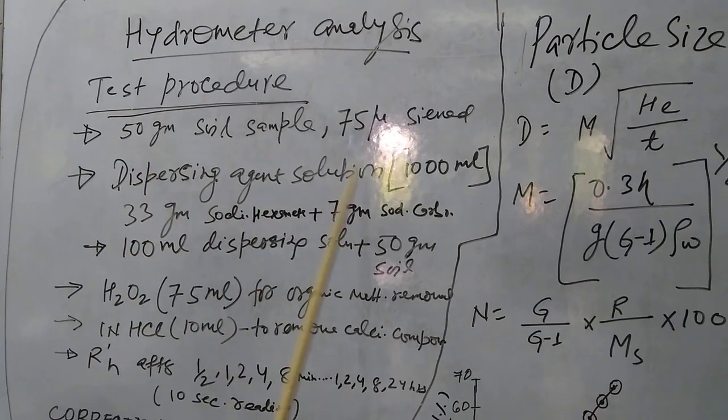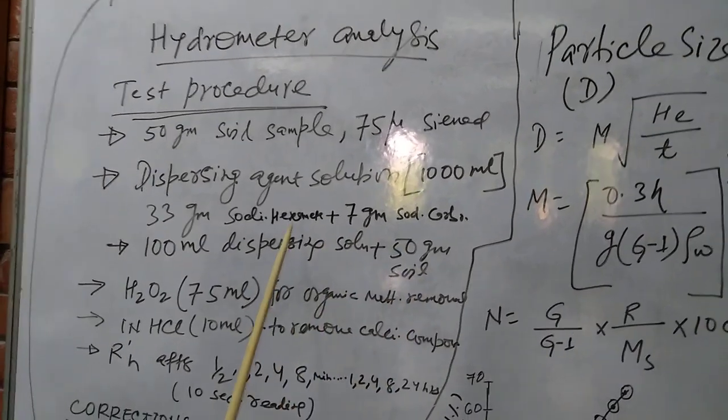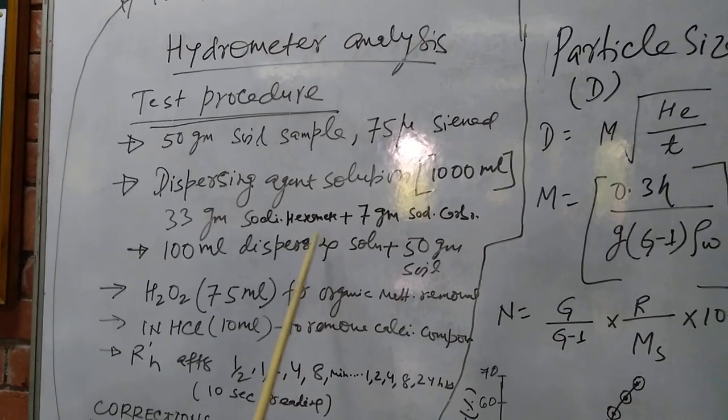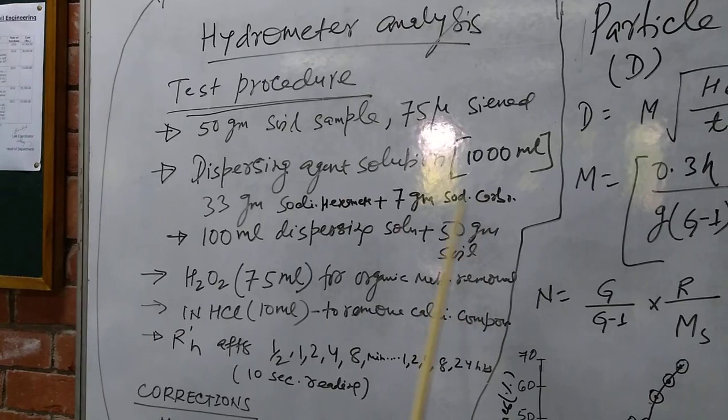In that soil, we shall mix 100 ml of dispersing agent solution. How we can prepare the dispersing agent solution? We shall take 33 grams of sodium hexametaphosphate plus 7 grams of sodium carbonate and make up to 1 liter.